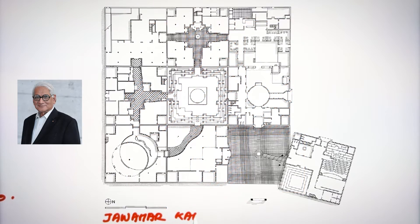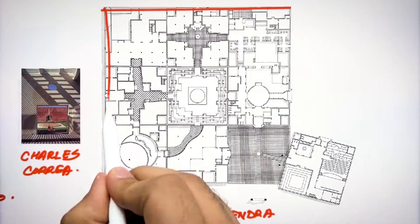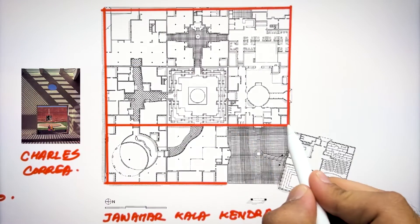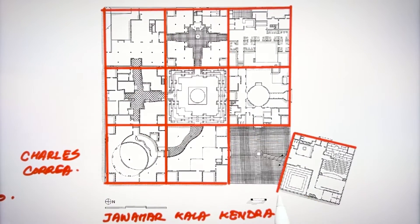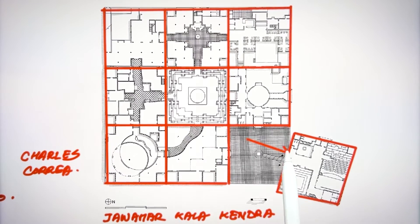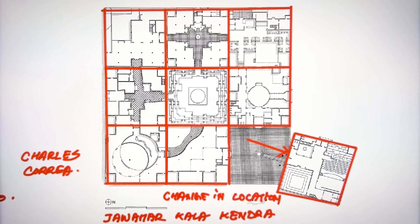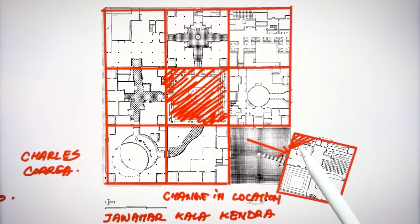This is the Jawahar Kala Kendra by Charles Correa and this is one of the most famous projects in Indian architecture and this was designed by the great master of Indian modern architecture also using the same concept of nine grid in designing the cultural center of Jaipur. Here he shifted one box because the plan is inspired by the Jaipur city which also has the shift in the nine grid.